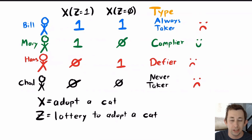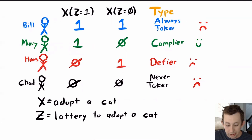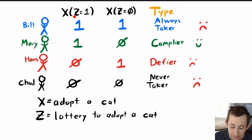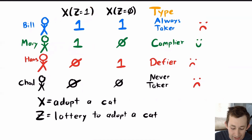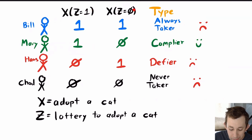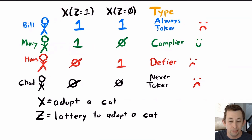Bill was an always taker, Mary was a complier, Hans was a defier, and Chad was a never taker. To tell what type of person each is, we look at their treatment status X based on their instrument value Z. If their name was pulled out of the hat, Z equals 1; if not, Z equals 0. We're interested in whether they adopted a cat given their Z value.